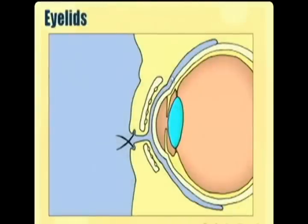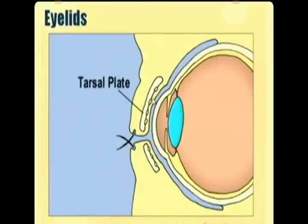The eyelids can be broken down into two layers: an anterior lamella, which has the muscles, and a posterior lamella formed by the tarsal plate. The tarsal plate is a somewhat tough layer of tissue that gives the eyelids their shape, and some of the muscles that open and close the eye insert on this tarsal plate.